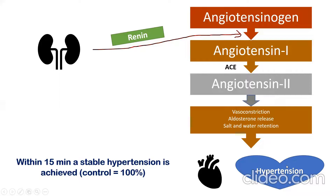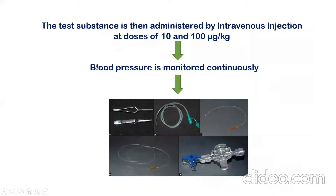Now wait for a few minutes — you can observe a stable hypertension in the rat and that rat is considered a control animal. Then you can administer your test compound in various doses ranging from 10 to 100 microgram per kilogram and observe the blood pressure after giving the test compound. Whatever effect you are getting, you compare that effect with that of the control animal.